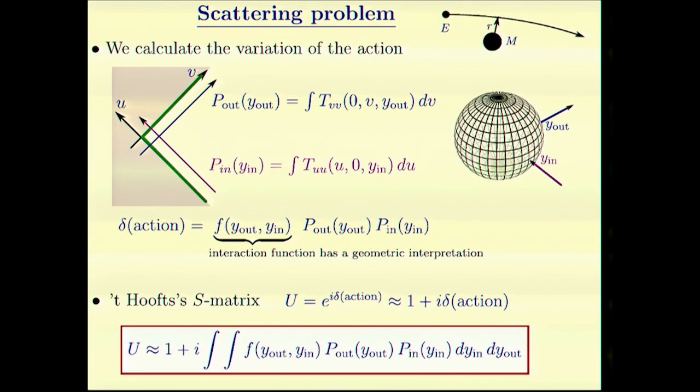Now, it's not hard to approach this problem. That was done by Tuft. One needs to consider the scattering problem. Usually in the scattering problem, we want to calculate the angle by which the classical trajectory deviates. But now we want to calculate the variation in the action. This variation will be given by the effective momentum or energy of infalling radiation and outgoing radiation. It's also parameterized by points on the horizon where this radiation comes in or out of the black hole.